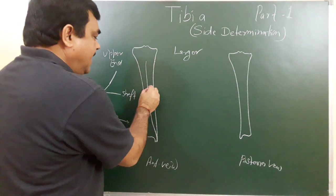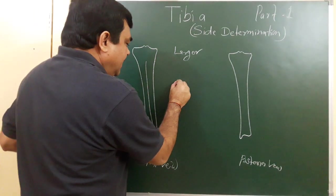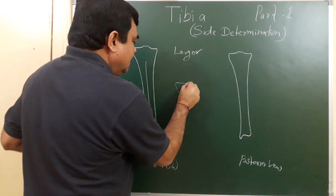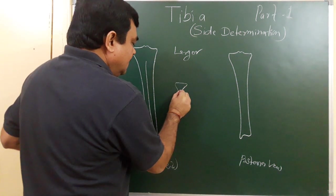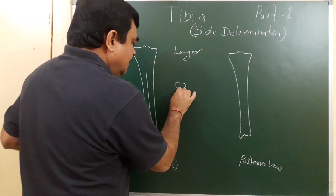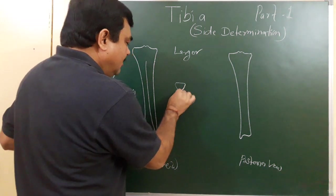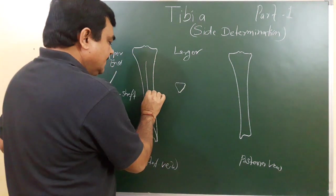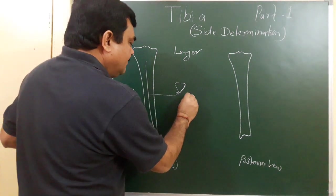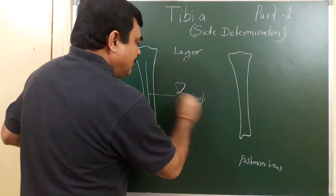This is the anterior border of the shaft. The anterior border is the sharpest border of the tibia.